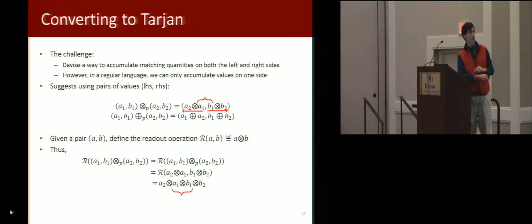And then we're gonna need to take these pairs and turn them back into answers, and so that's what this readout operation does. And if we apply that to this, you'll see that we do get the right kind of mirrored symmetry that we want. Out of this pair, when we apply readout, we get a one match with b one and a two match with b two.